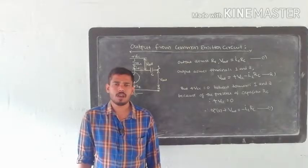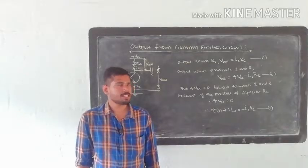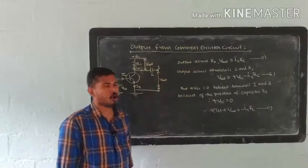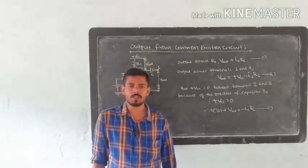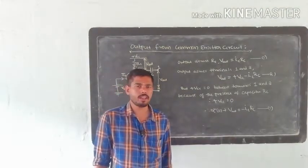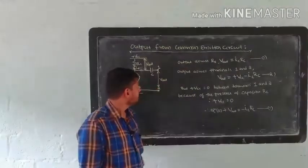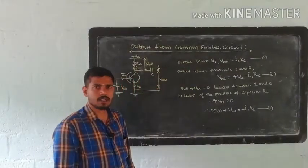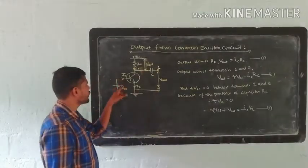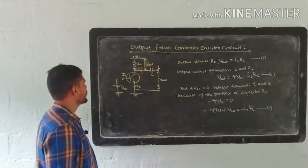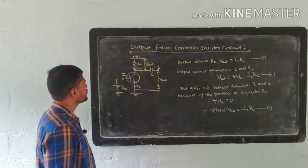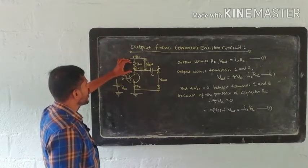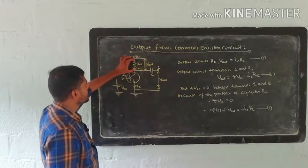Hi students. Our next topic is output from the common emitter circuit. In the common emitter circuit, the output is evident. I am using a common emitter transistor circuit. In the common emitter transistor circuit, the output is taken across RC.